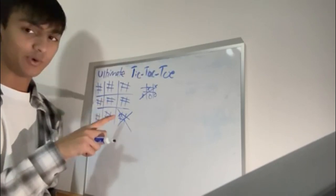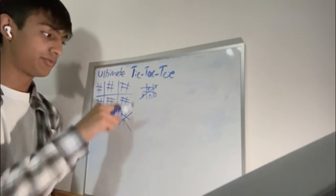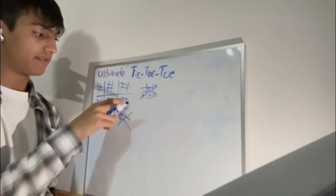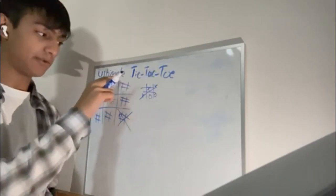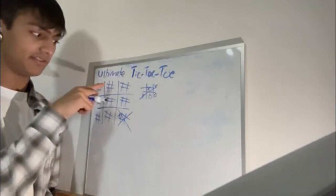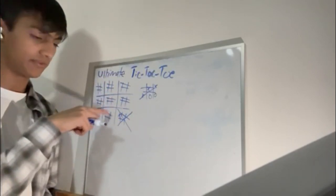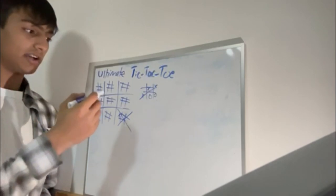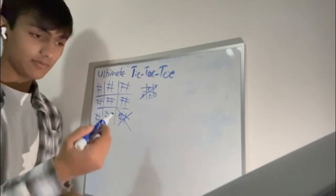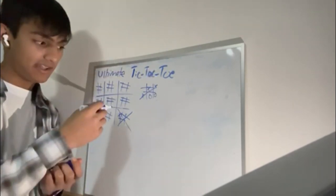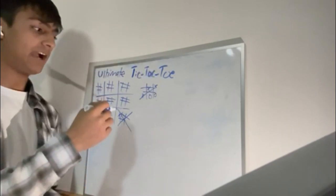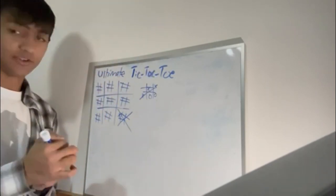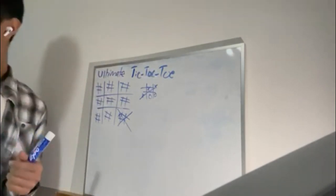To win, you need three big squares in a row — whether that's horizontally, vertically, or diagonally. So once you win the small game, you get the big square. But you have to win the other bigger squares to get your Tic-Tac-Toe in the end.